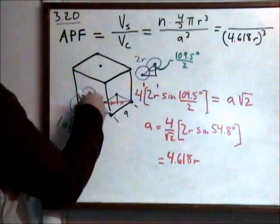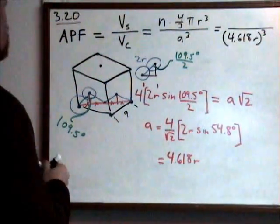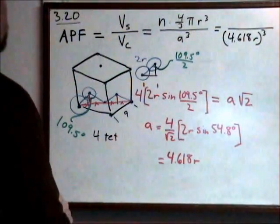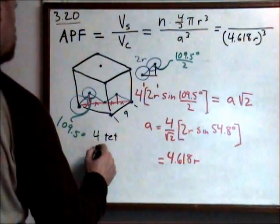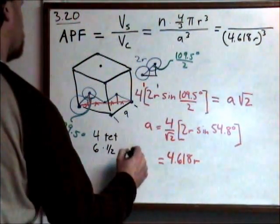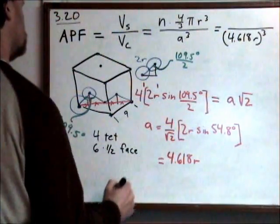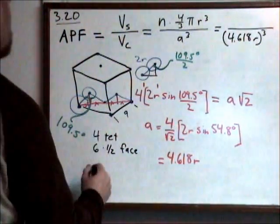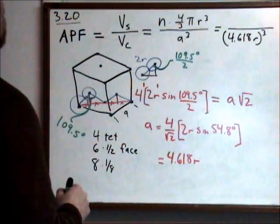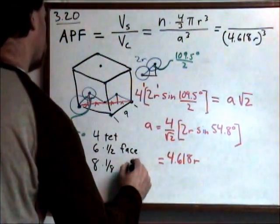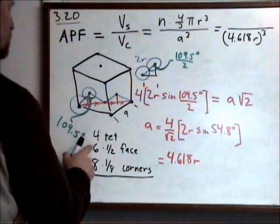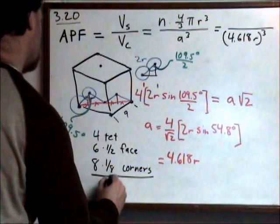So we have four at the tetrahedral spots. We have six on the faces and they only count one-half. Then we have eight on the corners and they only count one-eighth because only one-eighth is actually in the box. Four plus three plus one is a total of eight.